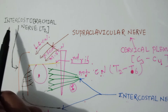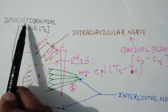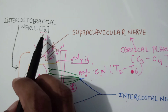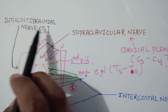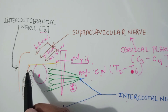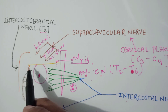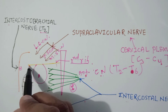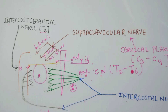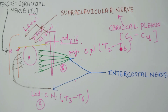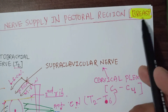Another nerve is the intercostobrachial nerve, which arises from T2. This nerve mainly supplies the floor of the axilla and the upper half of the medial side of the arm. So that's all about the nerve supply in the pectoral region, mainly focusing on the breast region.